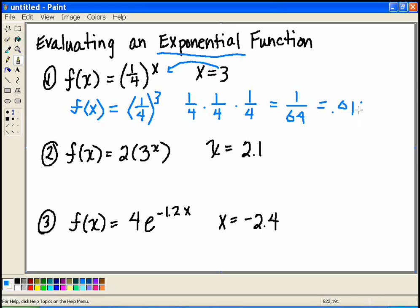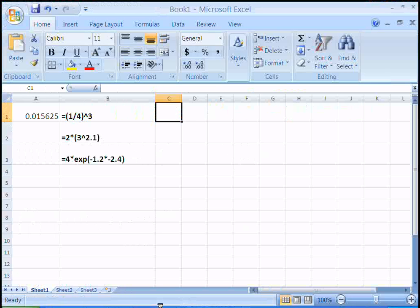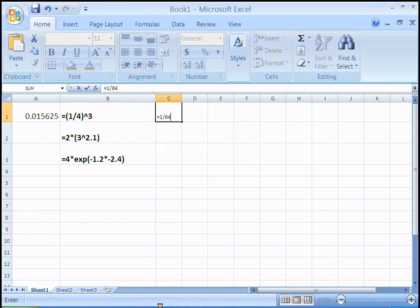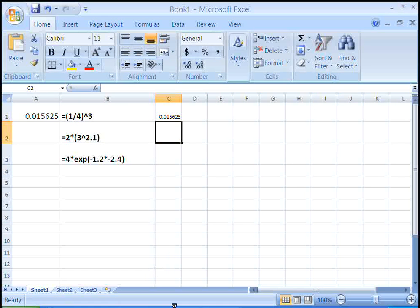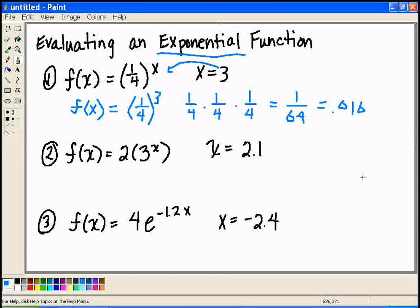To make sure we got it right, 1 over 64, we can compare the two. So here I'll say equals 1 divided by 64. And sure enough, they're the same answers. But notice on your calculator or in Excel, you're going to return a decimal value. It's really no good way of getting the 1 over 64. Let's try a different example.